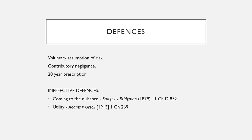Next we're looking at defences. There's voluntary assumption of risk, contributory negligence, and the 20-year prescription — which is rare to use. This is where the nuisance has been around for 20 years and they're only now coming to claim; after 20 years it's no longer a nuisance. There are also ineffective defences. Coming to the nuisance — buying a house knowing the tube runs next to it — was held not to be an effective defence in Sturges v Bridgman. Utility isn't really an effective defence either, as shown in Adams v Ursell where a fish and chip shop argued it was providing the community with cheap nourishment — the courts didn't allow it as a defence.